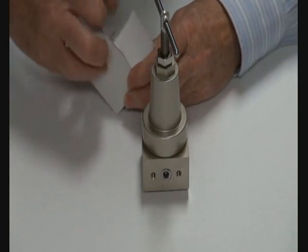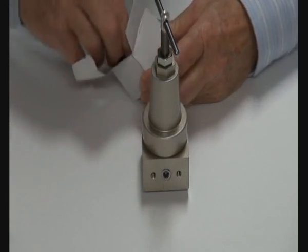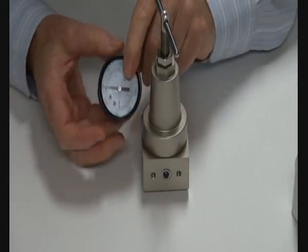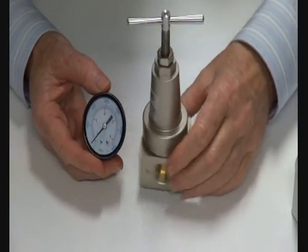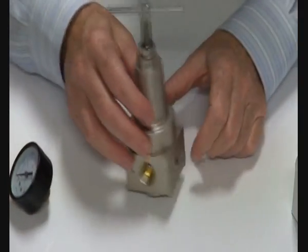The gauge is dual scale, showing both bar and PSI. The regulator has two gauge ports - one with a plug and one open, which can be swapped depending on mounting orientation.